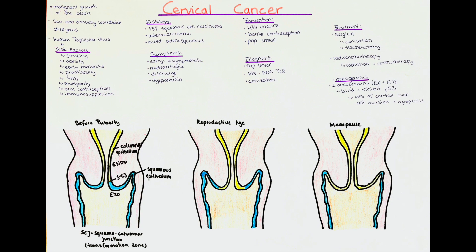Luckily, there are a few measures a woman can take to reduce her risk of developing cervical cancer or to protect herself from an HPV infection. Those include receiving the HPV vaccine, using a condom as a barrier contraceptive, avoiding multiple partners — as this increases the risk of contracting HPV or other STDs — and attending the annual pap smear to check for malignant growth in the cervix.